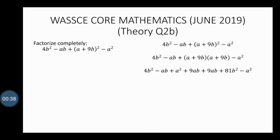Expanding fully, we get 4b² minus ab plus: a times a gives a², a times 9b gives 9ab, plus 9b times a gives 9ab, plus 9b times 9b gives 81b², minus a².